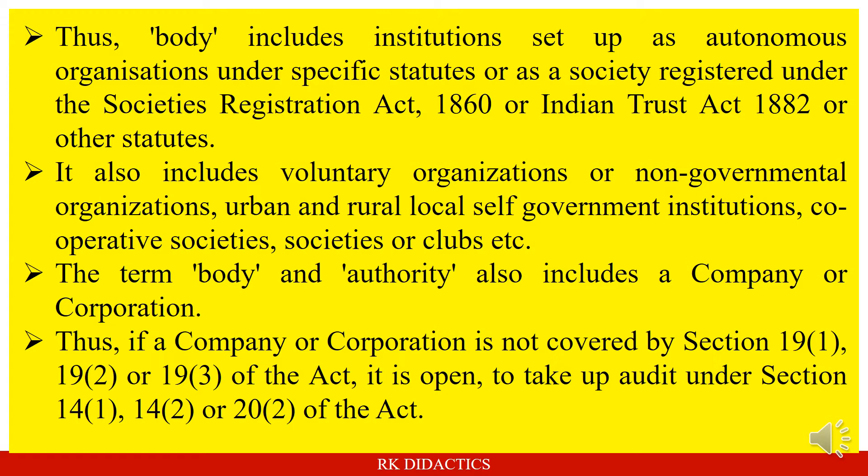The term 'body and authority' also includes a company or corporation. If a company or corporation is not covered by Section 19(1), 19(2), or 19(3) of the Act, it is open to take up audit under Section 14(1), 14(2), and Section 22 of the Act. Normally, audit of companies and corporations is done under Section 19(1), 19(2), and 19(3), but if a company or corporation is not included under those sections, they can be audited under Sections 14(1), 14(2), and 22.